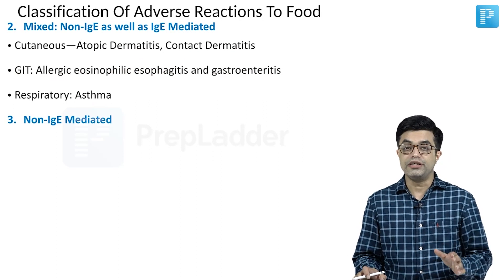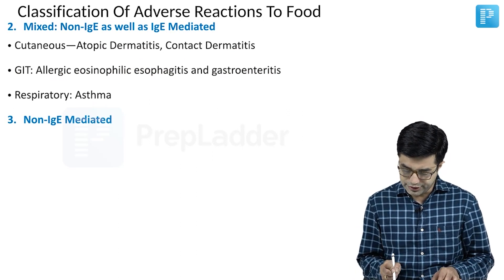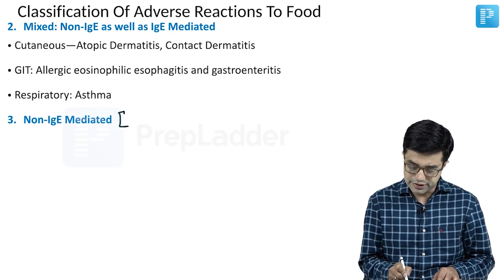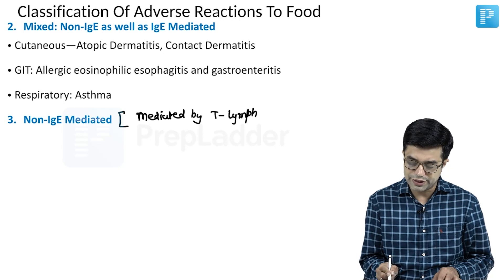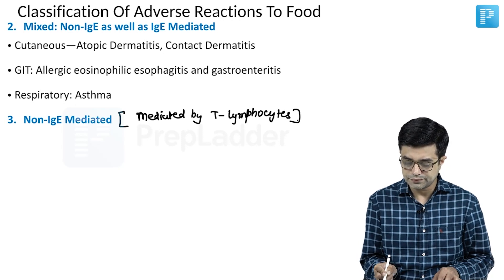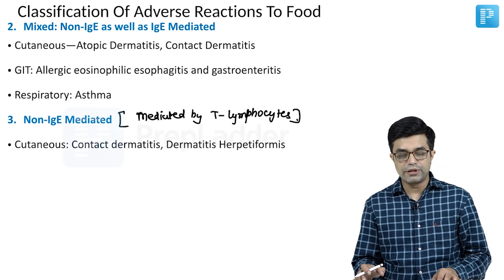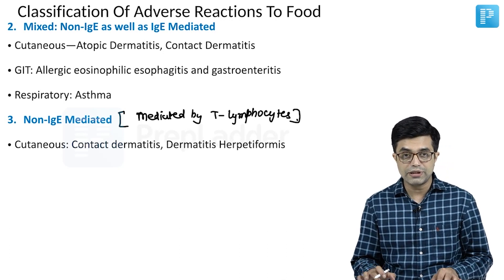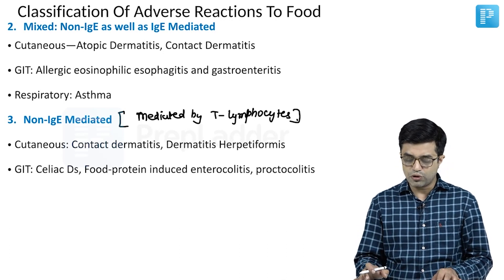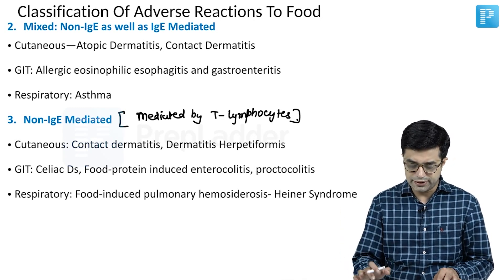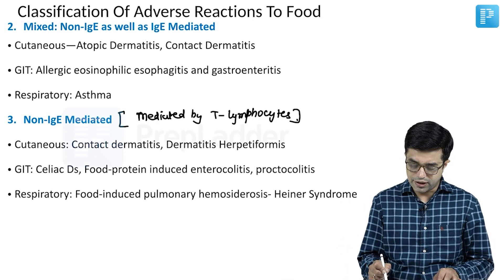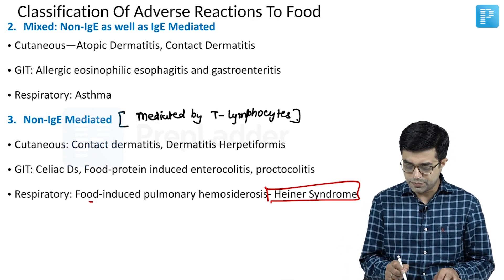The third category is non-IgE-mediated food allergies, which are mostly mediated by T lymphocytes. Cutaneous forms include contact dermatitis and dermatitis herpetiformis. GI forms include celiac disease, food protein-induced enterocolitis, and proctocolitis. Respiratory forms include Heiner syndrome, which is food-induced pulmonary haemosiderosis.